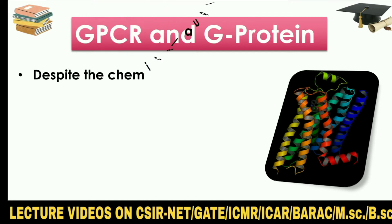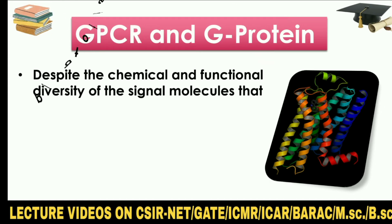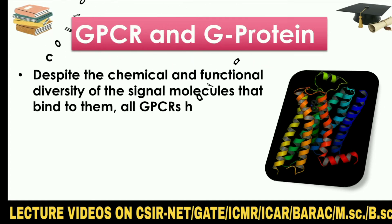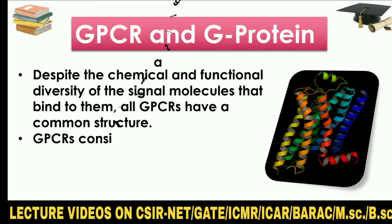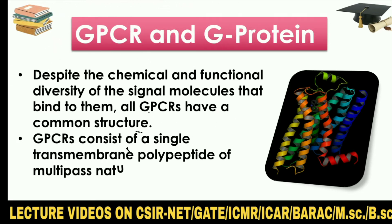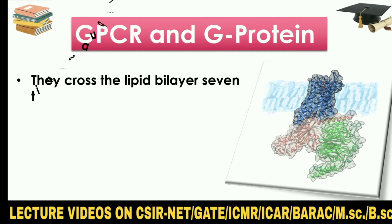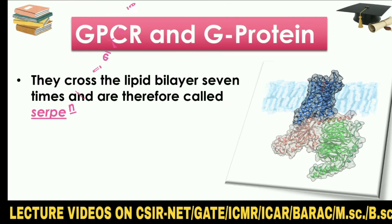Despite the chemical and functional diversity of the signal molecules that bind to them, all GPCRs have a common structure. GPCRs consist of a single transmembrane polypeptide of multi-pass nature. They cross the lipid bilayer seven times and are therefore called serpentine receptors as well.